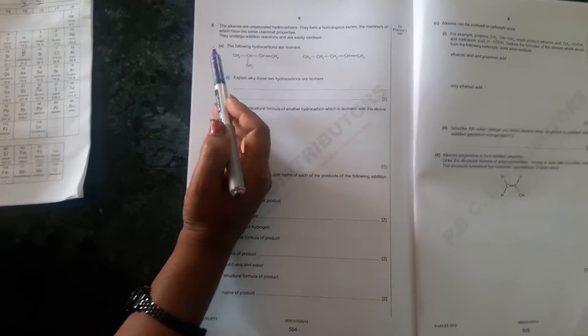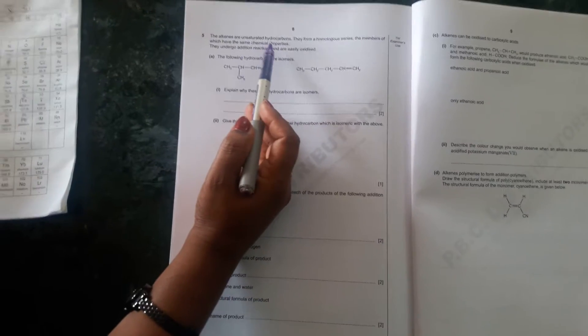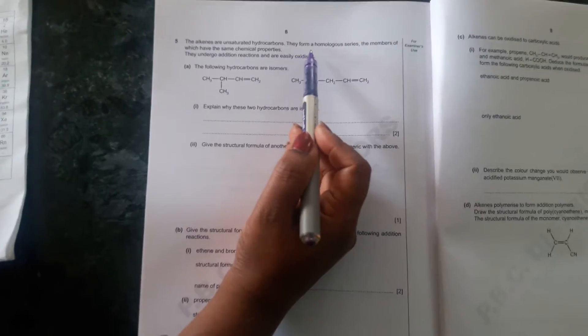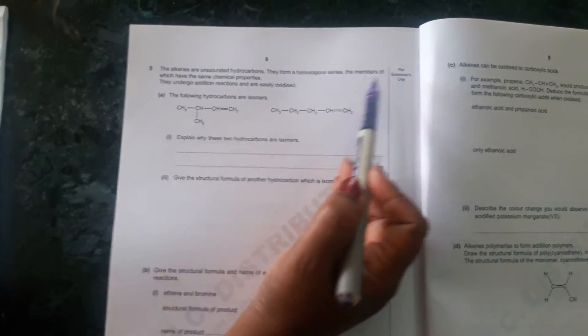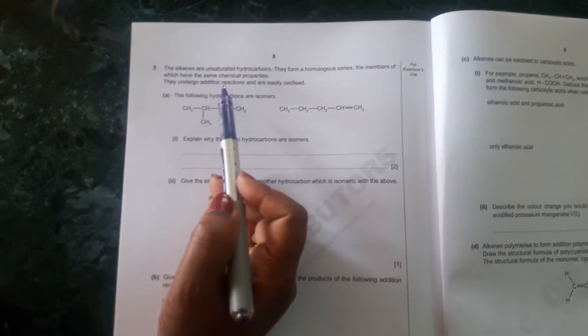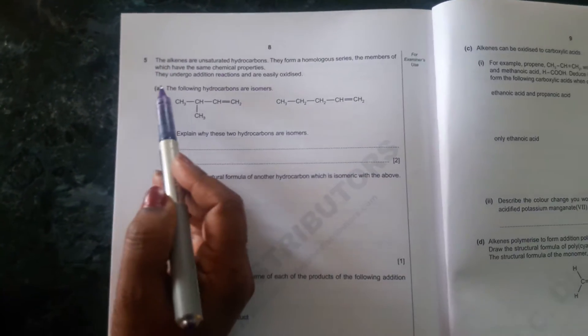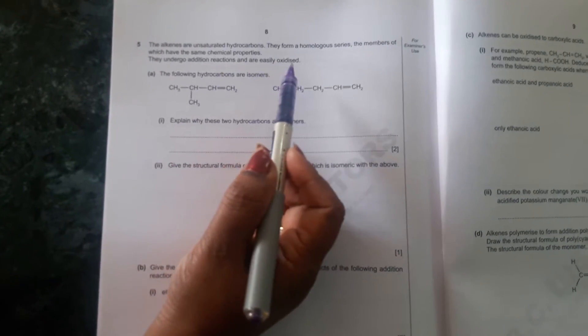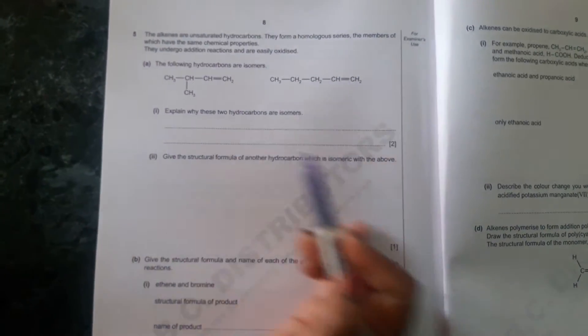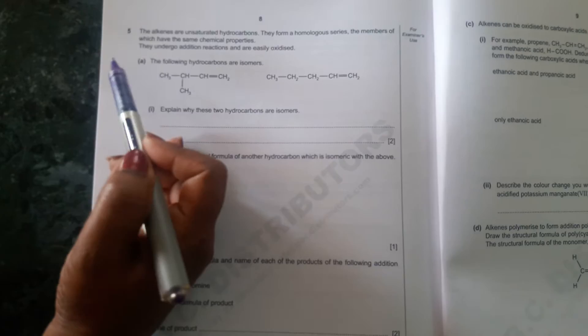So now see the question. The alkenes are unsaturated hydrocarbons. They form a homologous series and the members of which have same chemical properties. So they undergo addition reactions and are easily oxidized.